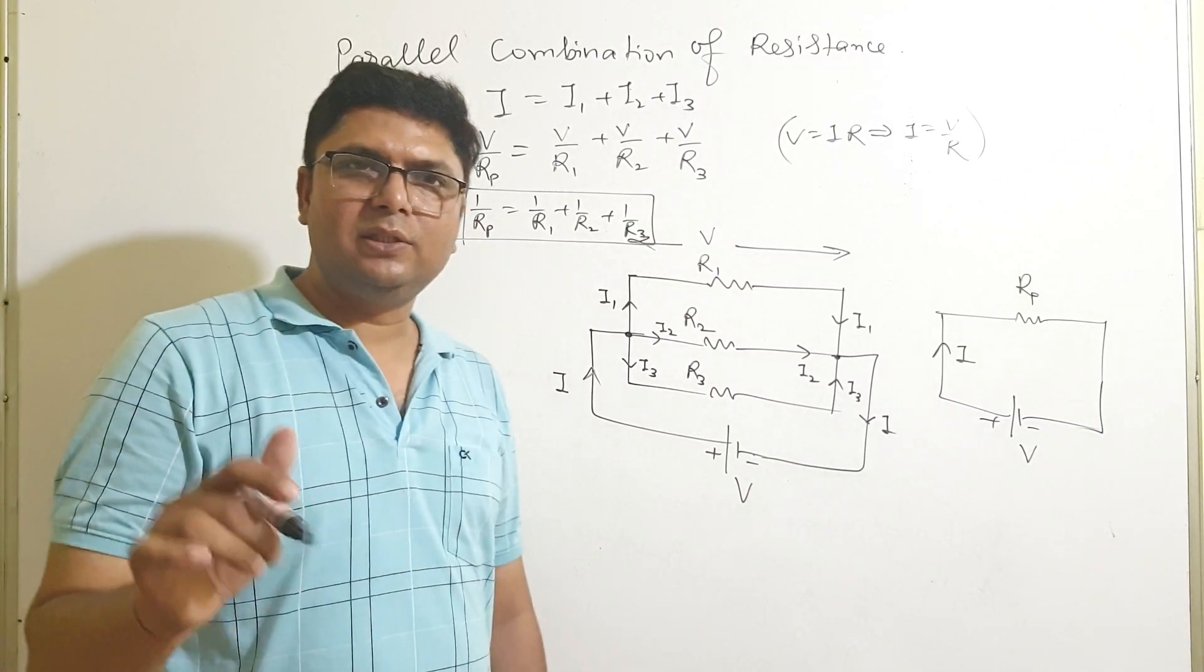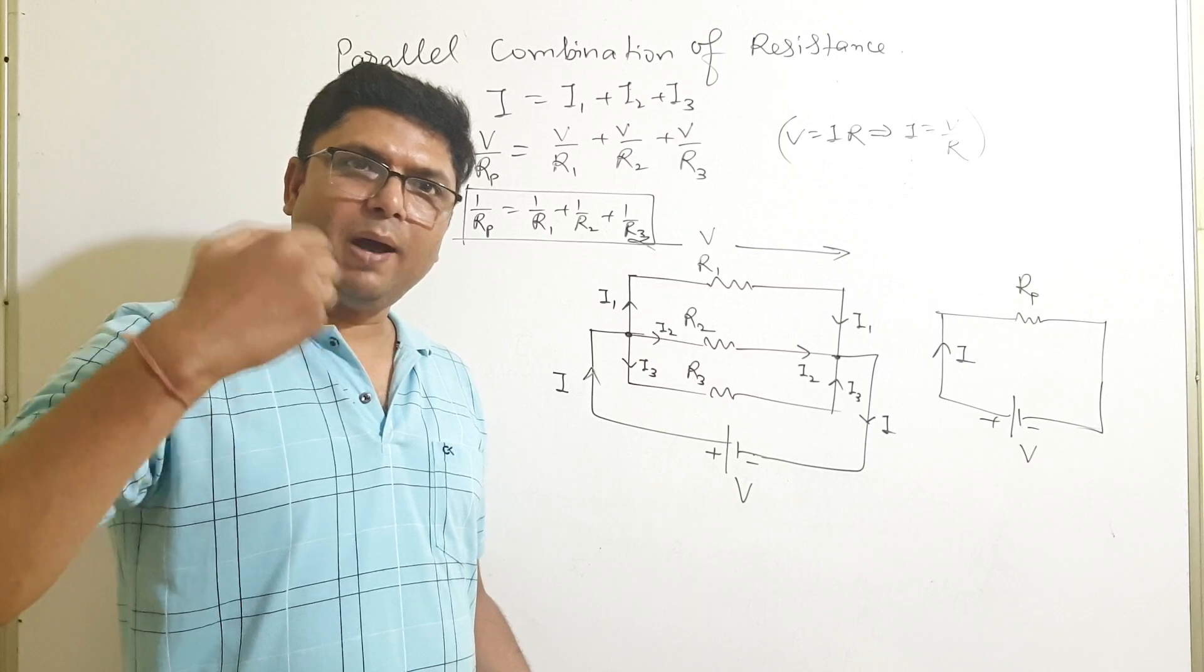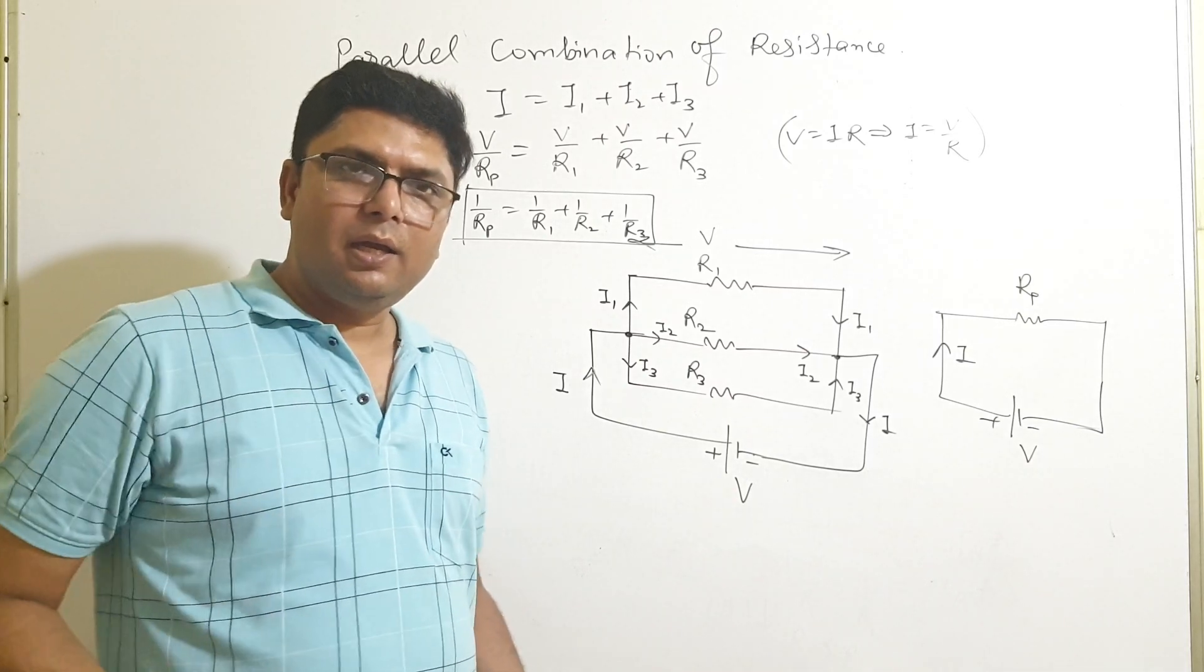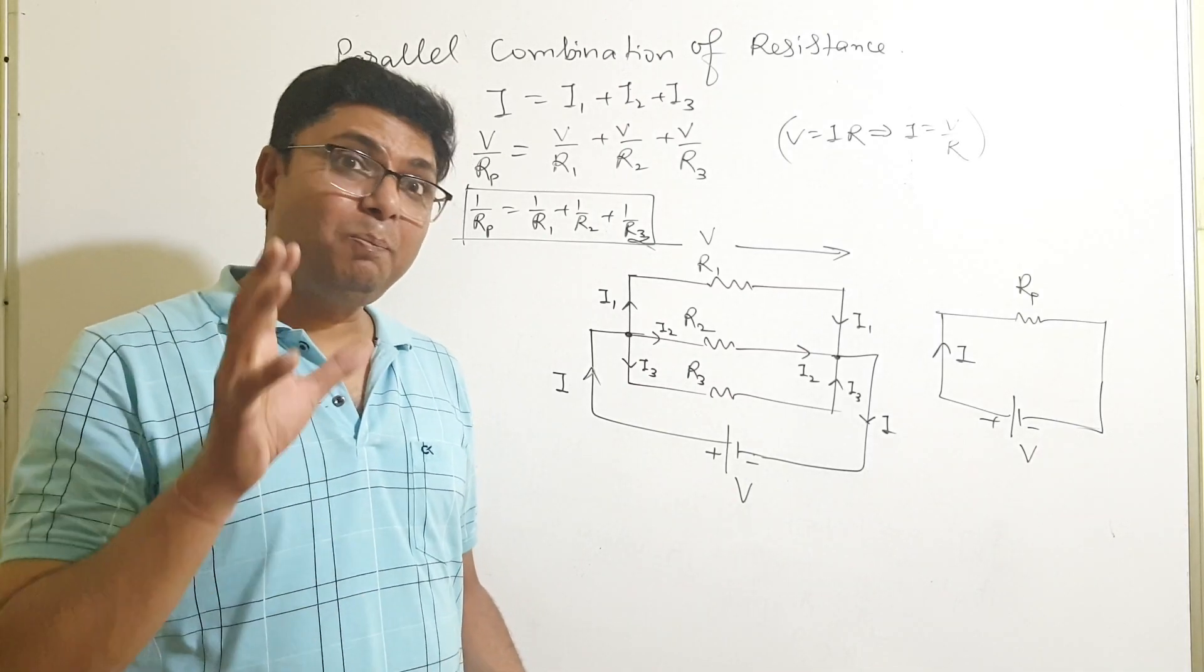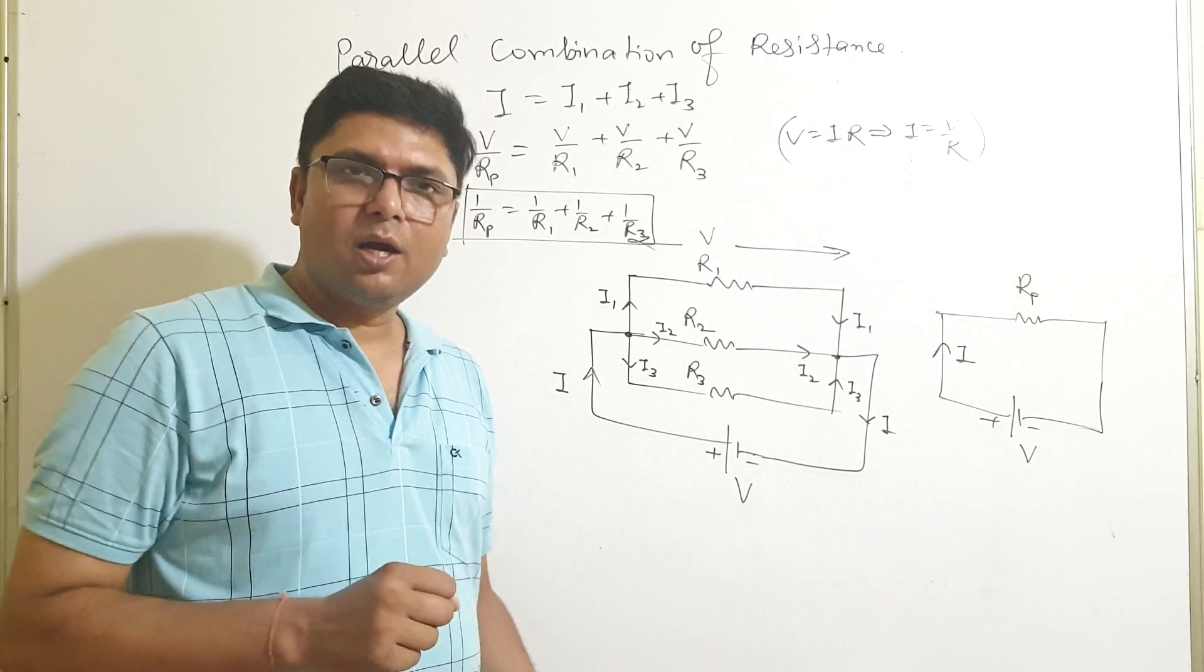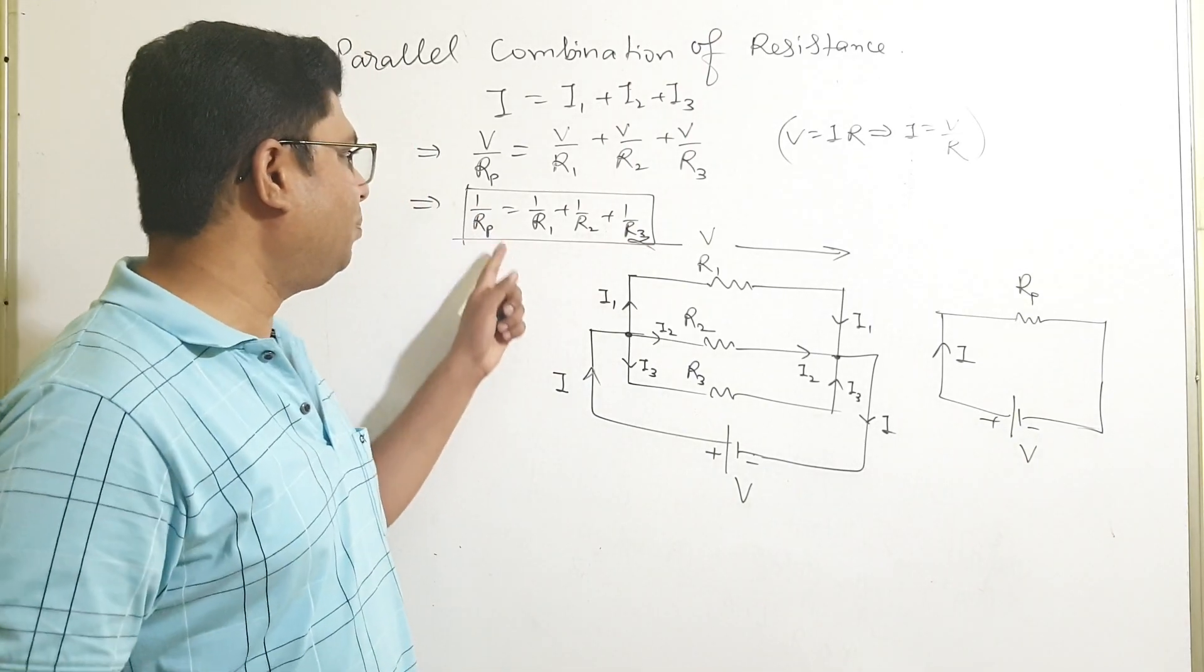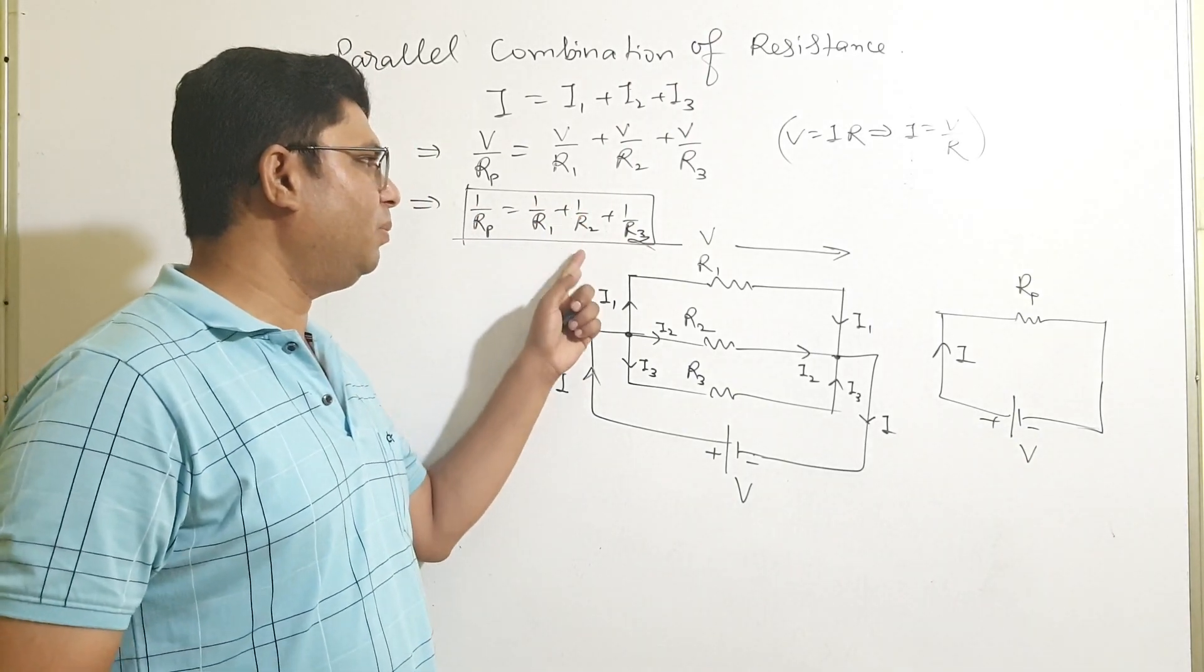Thus what you have seen, you have seen in series combination the resistance combined simple in algebraical addition, but in parallel combination the resistance combined in their reciprocal addition. So 1 by Rp equals to 1 by R1 plus 1 by R2 plus 1 by R3.